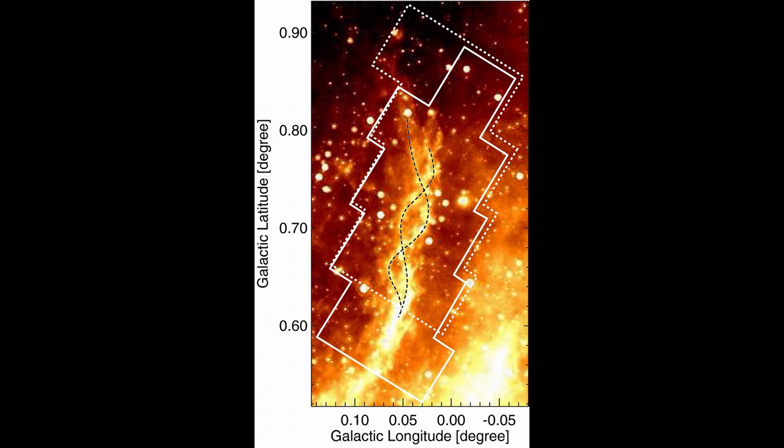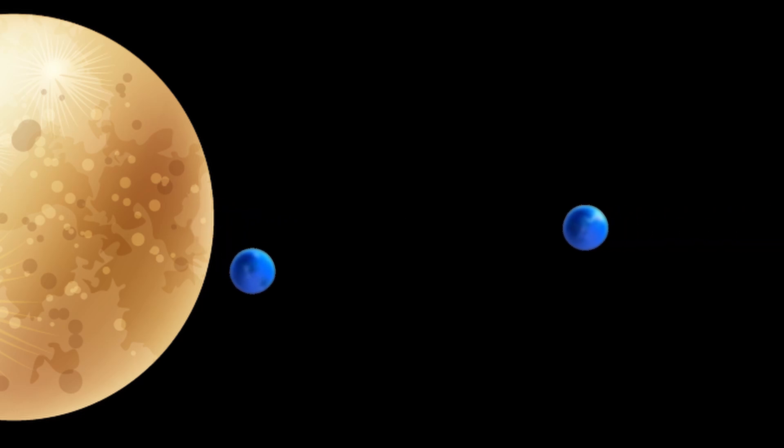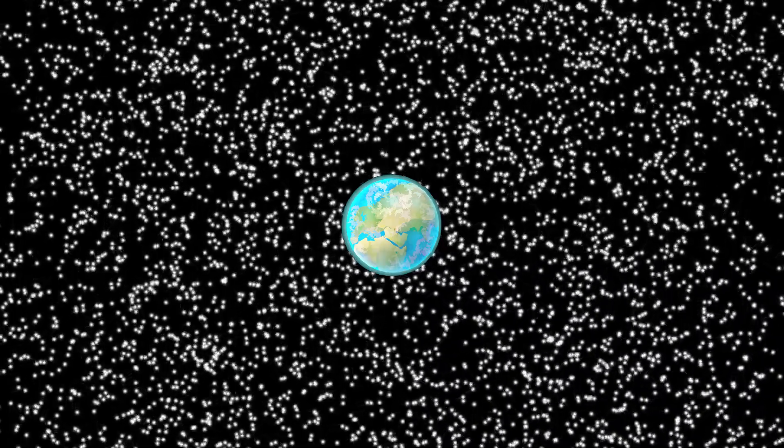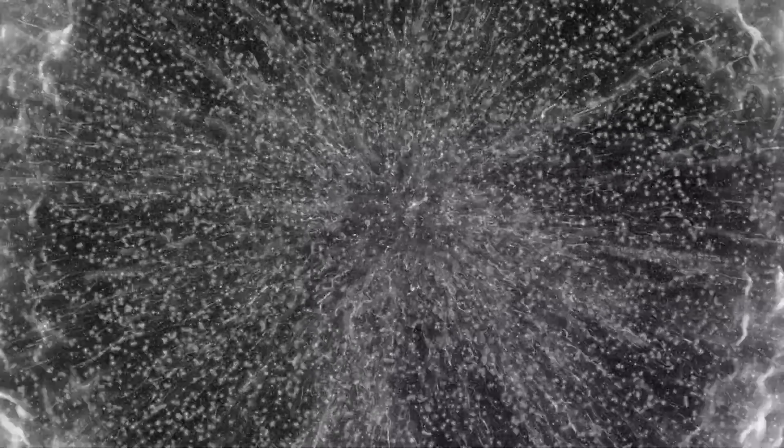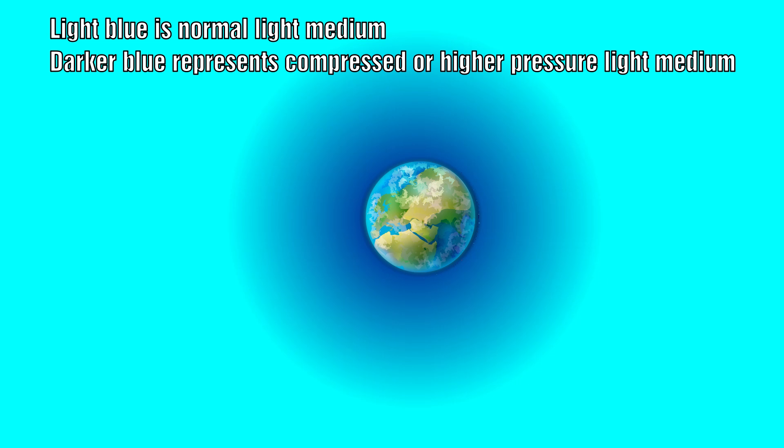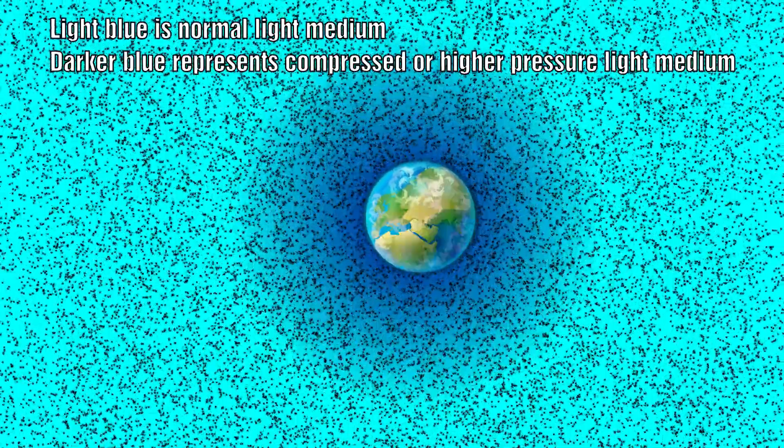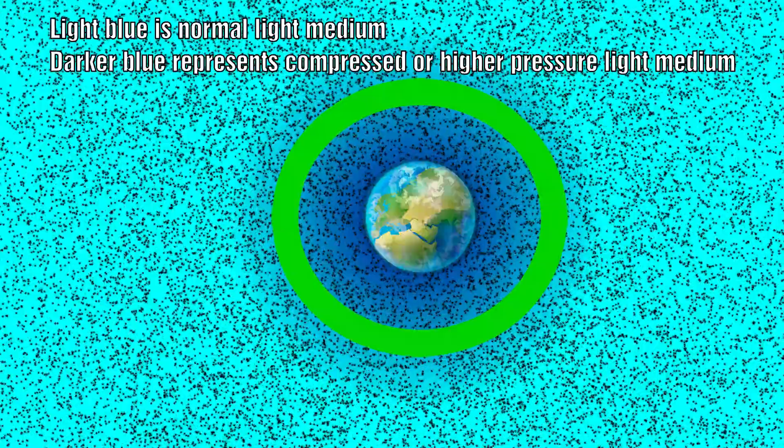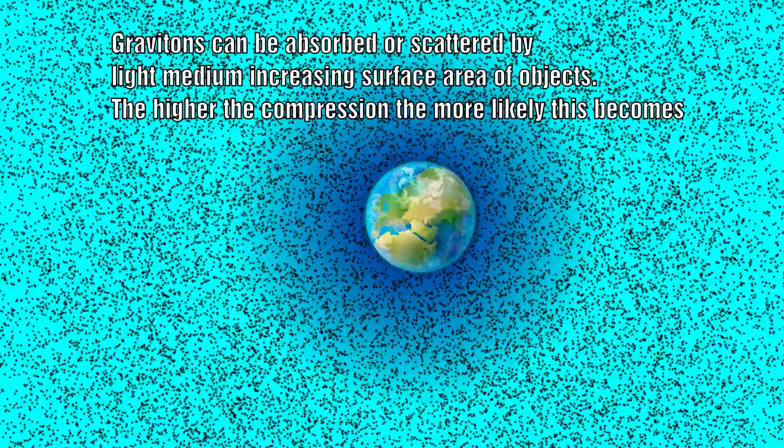In the previous episode we have discussed that these particles could either be absorbed by matter to cause the force or be scattered. The problem with the first is that this would cause matter to heat up and eventually incinerate. Tom van Flandern's solution to this relates to the concept that the light medium becomes denser around more massive objects and this means that some of the gravitons could be absorbed or scattered by this medium as well. It effectively increases the surface area of the objects. He also envisions that both absorption and scattering would take place.